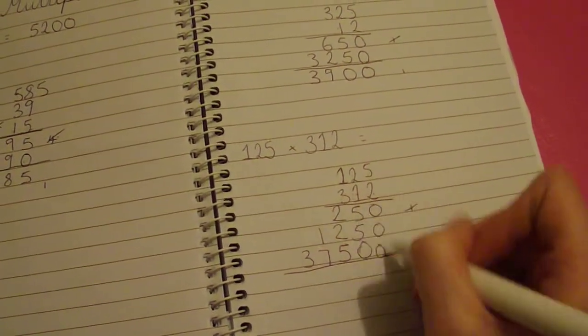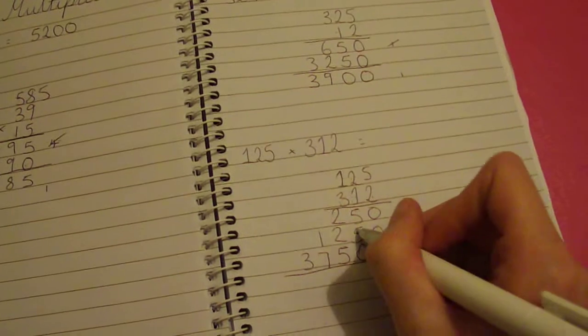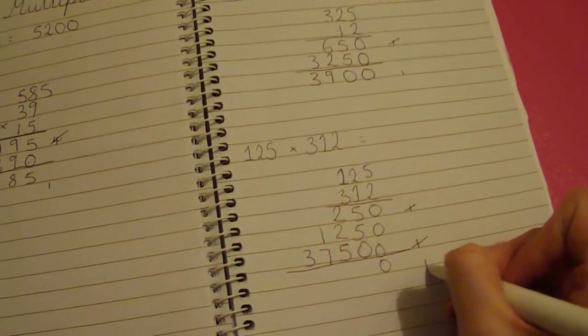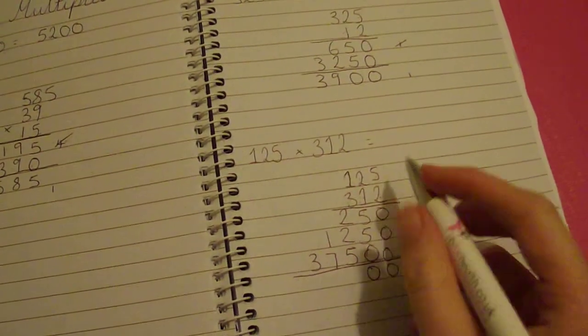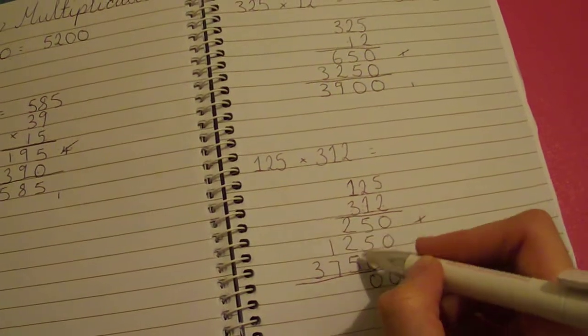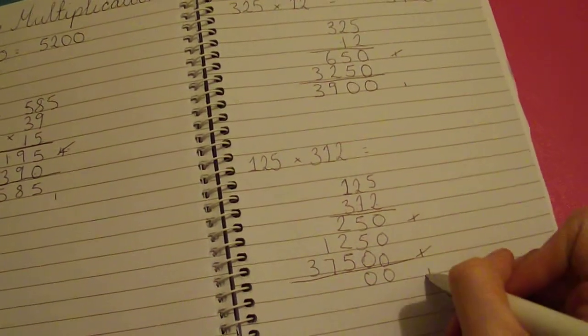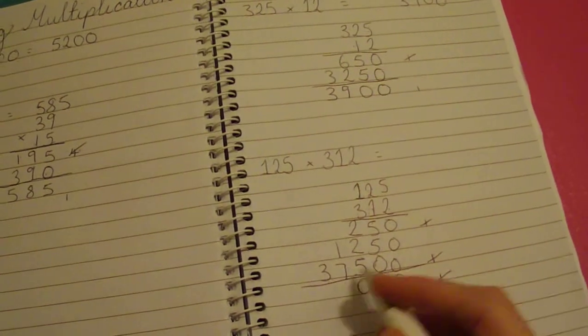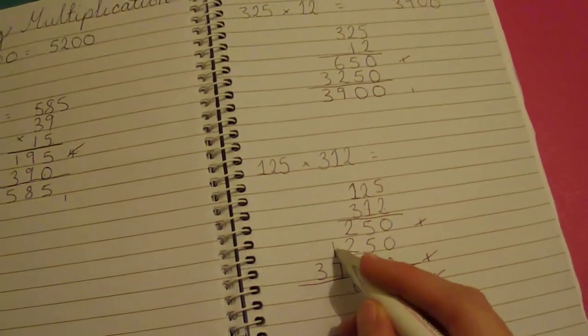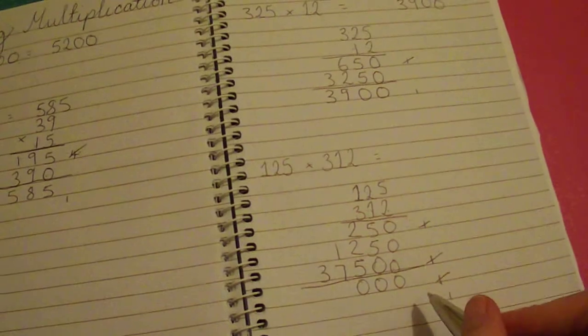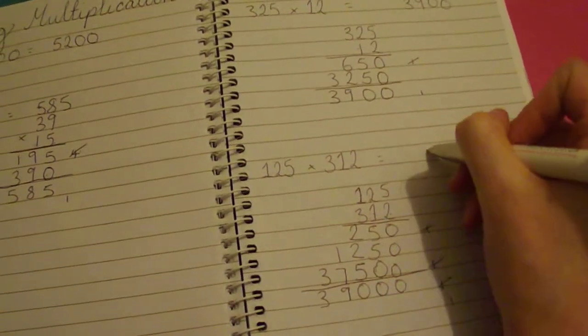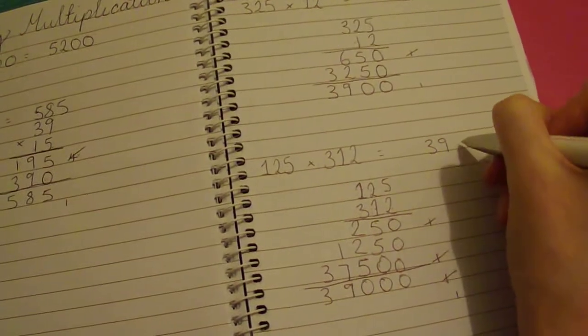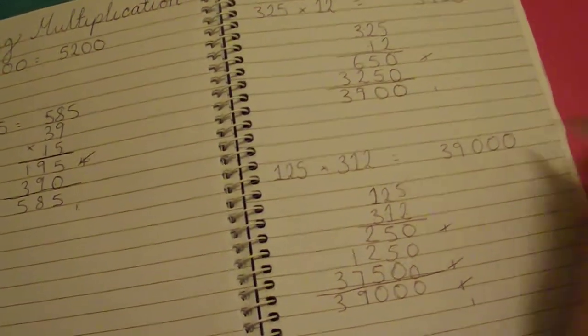You're then adding these up. 0, 0, 5 and 5 and 0 is 10. Carry your 1. Do your 0. 2 and 2 and 5 is 9. Plus your 1 is 10. So again, carry in your 1, put in your 0. 7 plus 1 is 8. Add your 0 is 9. And then you've got your 3. So 39,000 is your answer to this.